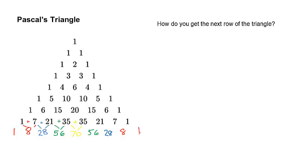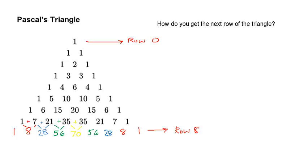Before we talk about the connection this has to combinatorics, I want to make a few notes about how we describe the different parts of this triangle, just so that we're on the same page. We always call the very first 1 at the top row 0. That way it works out nicely with some other things we're going to do. So for instance, in the row that we just found — the one that has the 8 in it — we know that that's going to be row 8.